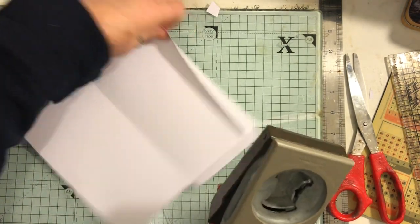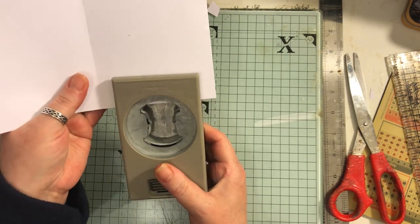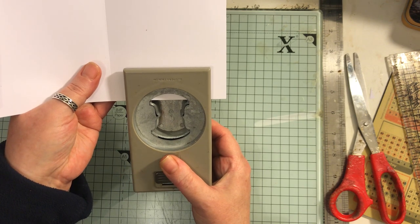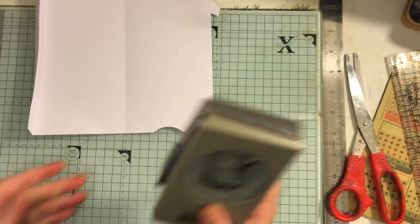My circle punch doesn't work, it just keeps sticking, I need to try and sharpen it somehow, so I'm just using my tab punch and just using a little bit of that to punch a little notch in there like so.